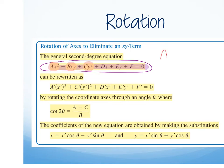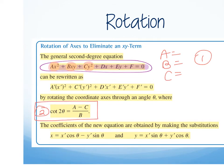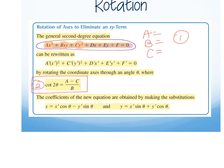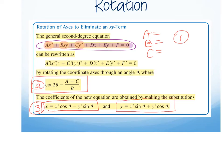Step two: use the equation cotangent of 2θ equals A minus C over B to find theta. You get a ratio, use the unit circle to figure out what 2θ is, then divide by 2 to get theta. Step three: replace x with x prime cosine θ minus y prime sine θ, and replace y with x prime sine θ plus y prime cosine θ.